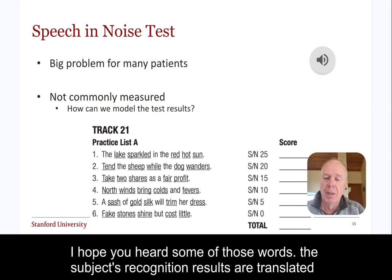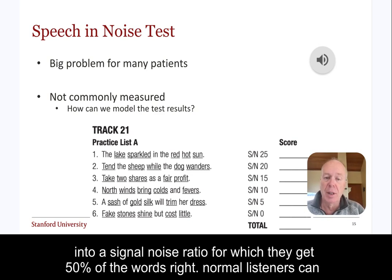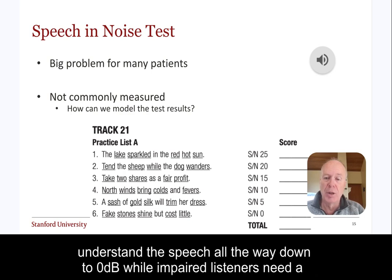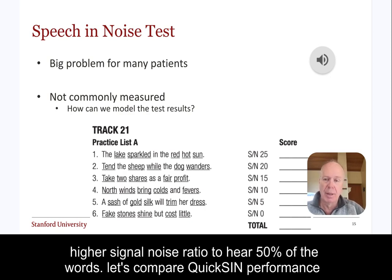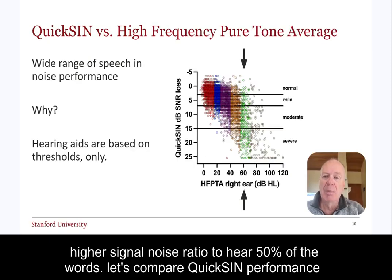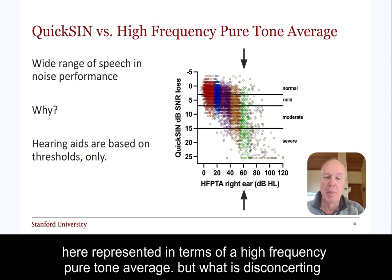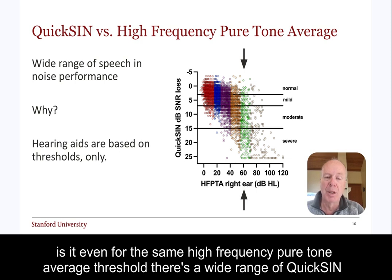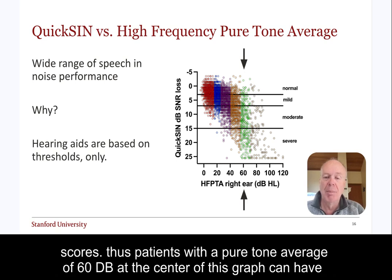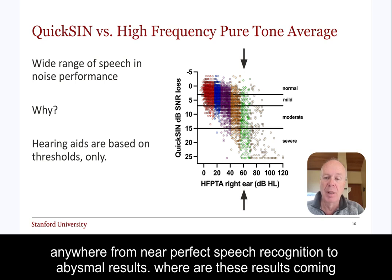I hope you heard some of those words. The subject's recognition results are translated into a signal-to-noise ratio for which they get 50% of the words right. Normal listeners can understand the speech all the way down to 0 dB, while impaired listeners need a higher signal-to-noise ratio to hear 50% of the words. Most hearing assessment is based on hearing thresholds, here represented in terms of a high-frequency pure tone average. But what is disconcerting is that even for the same high-frequency pure tone average threshold, there is a wide range of QuickSyn scores. Thus, patients with a pure tone average of 60 dB can have anywhere from near-perfect speech recognition to abysmal results.